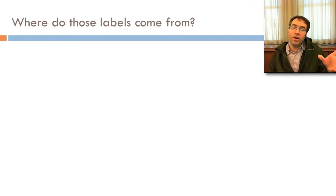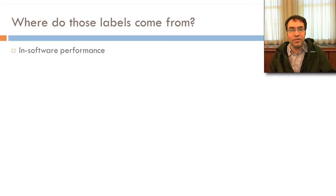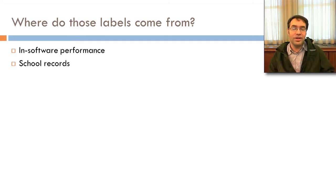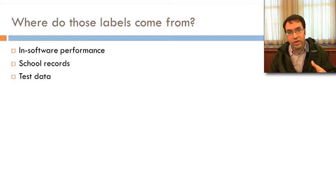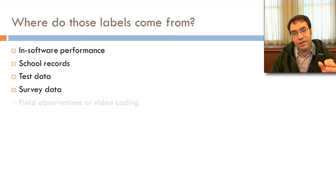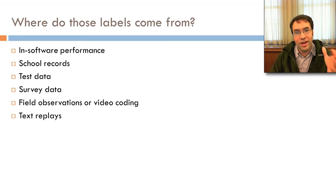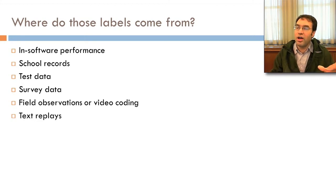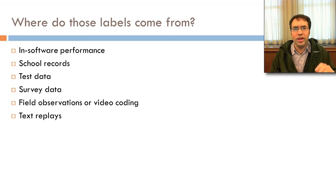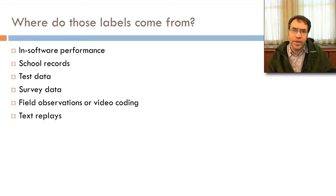You may ask: where do these labels come from? They can come from a lot of places — student software performance (was the student correct or wrong?), school records, test data, survey data, field observations or video coding data, and text replays, which are pretty-prints of log files of student interaction with software. Didith Rodrigo's EDM workbench is a good tool if you want to learn more about that.